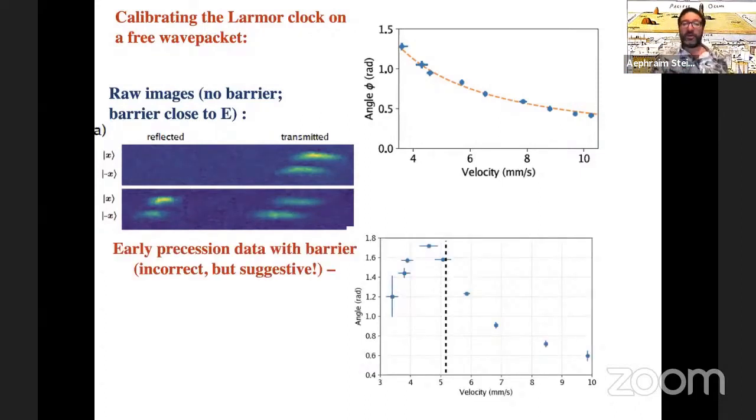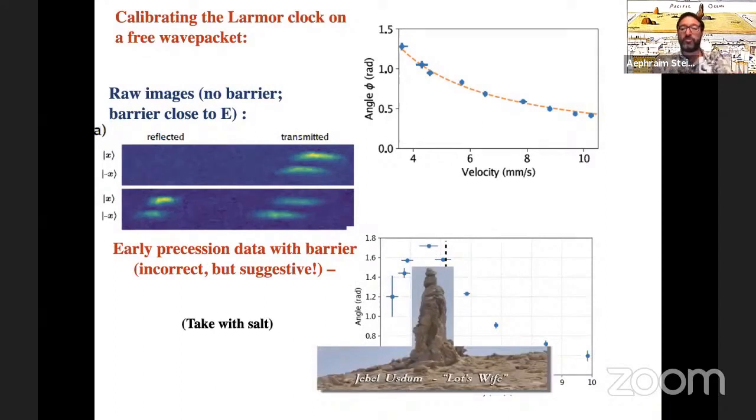So here's early data, and I want you to take it with some salt because things have changed since then. But what's suggestive is that you see that as we lower the velocity, this time grows, but instead of diverging, when the velocity or the energy just comes down to the barrier height, indicated by this vertical dashed black line, it's in fact finite at that point, as everything should be quantum mechanically. It cleans up all of our divergences. And then it begins to come back down. And that's one of the really striking predictions, both about this interaction time and in fact about the group delay as well, that lower energy particles can tunnel faster than higher energy particles. They're less likely to get across, but if they do get across, they're quite fast.